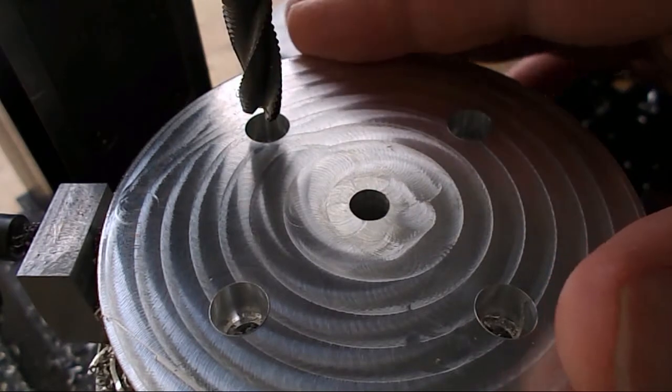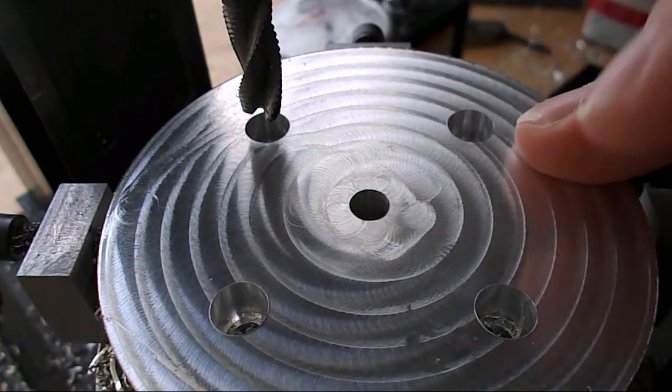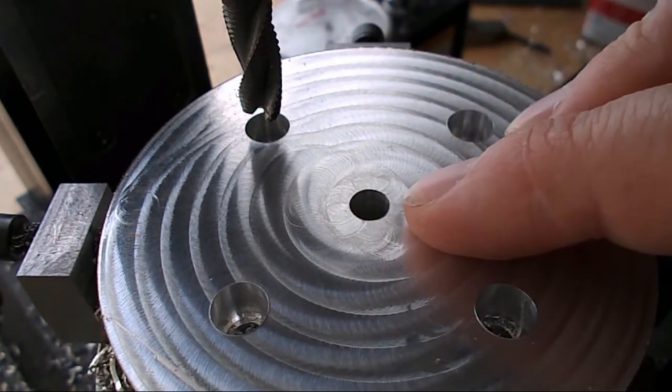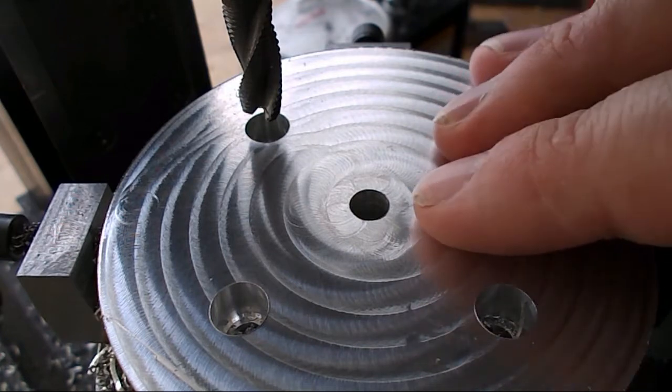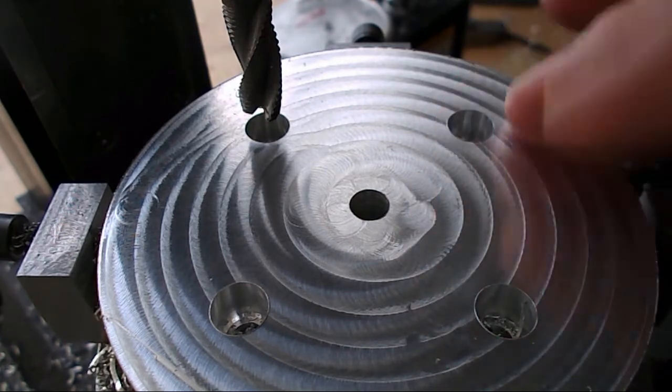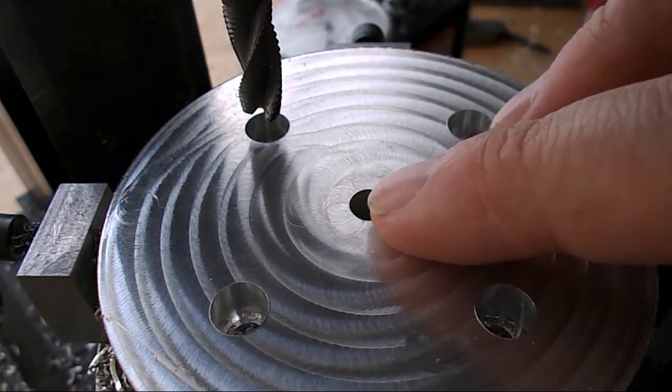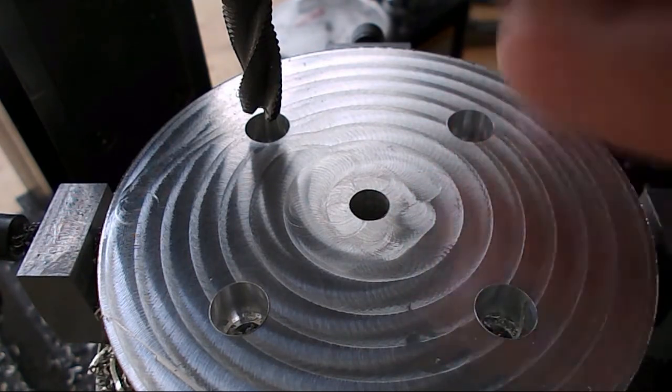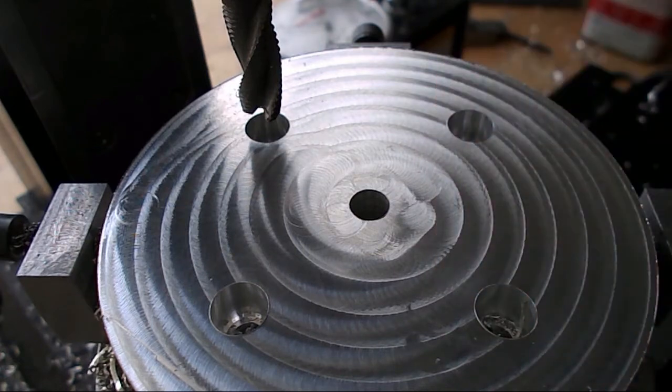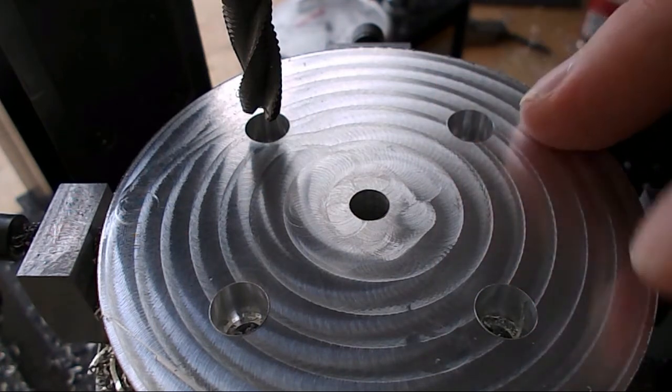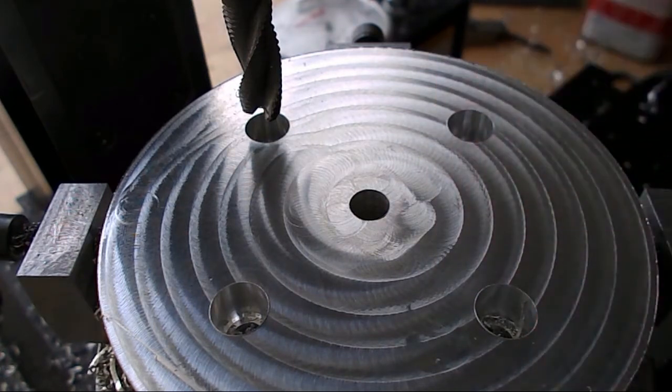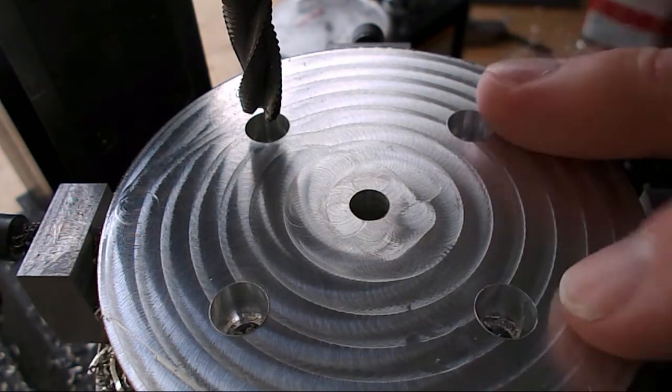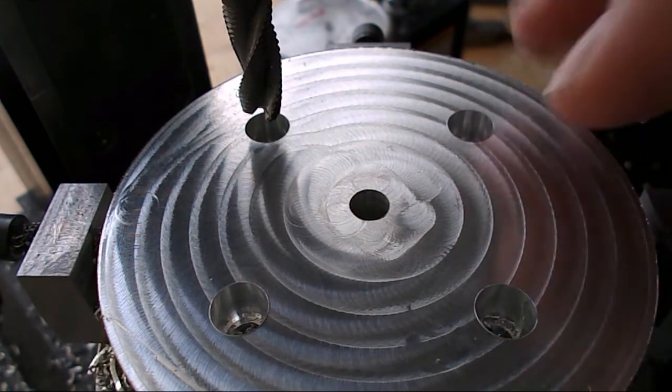Now that I have all the counter bores complete, the plan is to take it out of this setup, flip it over. I should just be able to put a pin in the center to orient it about the center and then face the other side so that it's parallel. And then from there I'm going to actually clamp it to the rotary table with these counter bored holes and drill and tap and get it set up to cut the gears.